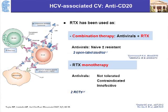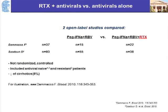Rituximab is an off-label use and has not been approved for this indication. There are now data emerging using it either in combination with antiviral therapy or in patients where antiviral therapy cannot be used. Two open-label studies compared pegylated interferon-alpha and ribavirin alone versus pegylated interferon-alpha, ribavirin, and rituximab — one from France and one from Italy. In one study these were given simultaneously; in the other, rituximab was given first with weekly infusions, then antiviral therapy was started after a month.